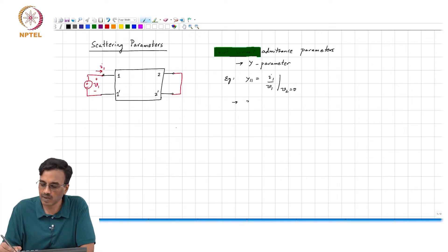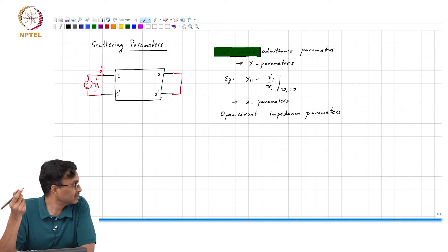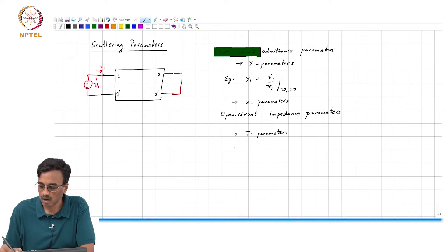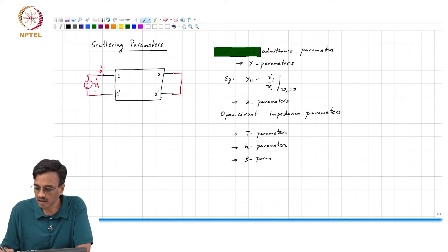Likewise, you have seen the z-parameter set, which are the open circuit impedance parameters. And you have seen other parameter sets - what others are you aware of? T-parameters, the chain parameters, and also the h-parameters and g-parameters.